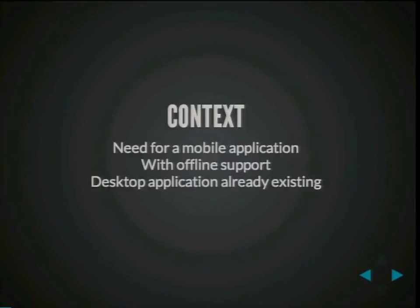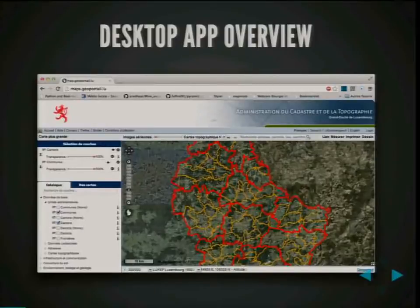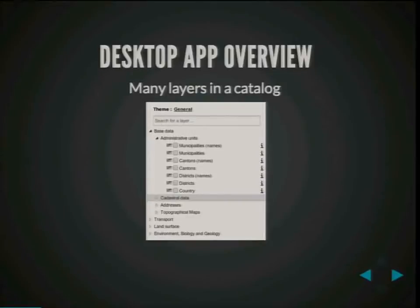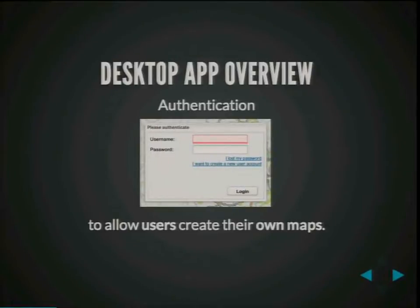We needed mobile applications with offline support, considering that there was already a desktop application existing. The desktop application has a lot of features — it's a data portal with a lot of layers. Users can choose what they want to display on the map. We have a catalog where you can choose layers, change the opacity of layers, and so on. We also have authentication and users can create their own maps. They can add points, lines, or polygons and style everything.